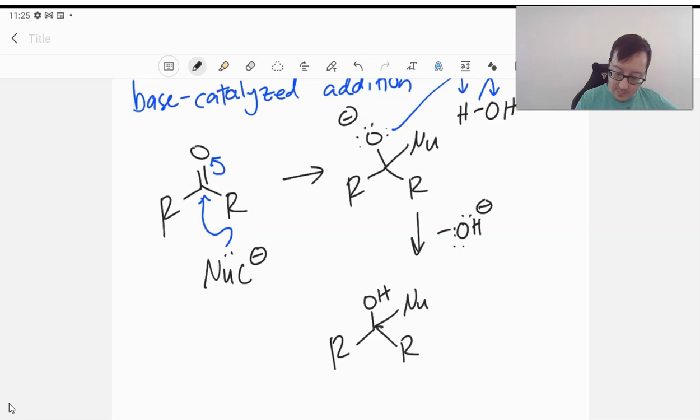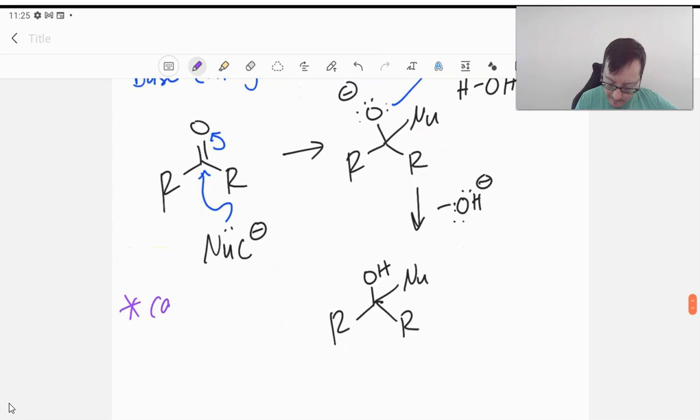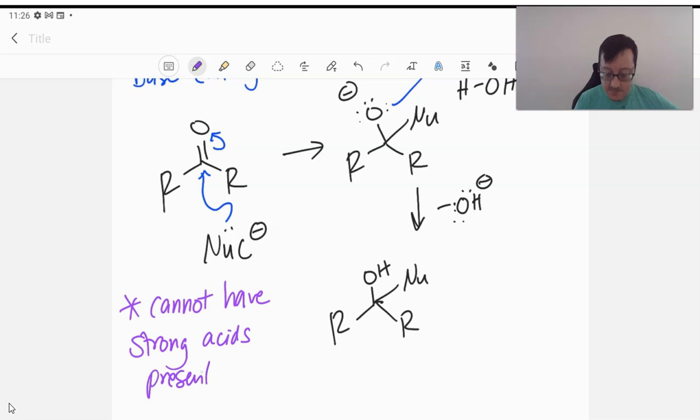So the important things for base-catalyzed processes is that we cannot have strong acids present in a base mechanism. Just can't, because the base would react with it. So strong acids are generally things that will be positively charged, like H3O+, hydronium. So we can't have those present in a base-catalyzed mechanism.